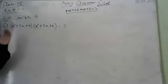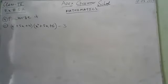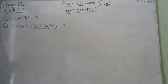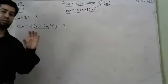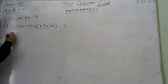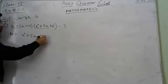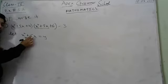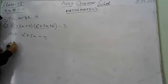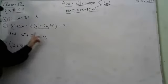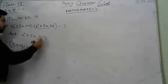You can see that x² plus 5x appears twice. To simplify, we use substitution: let y equal x² plus 5x. Replacing x² plus 5x with y gives (y plus 4)(y plus 6) minus 3.